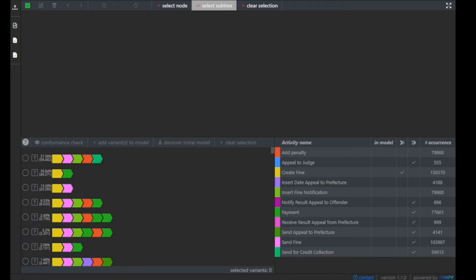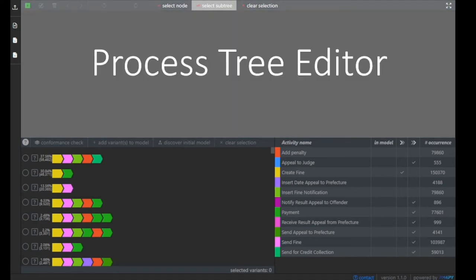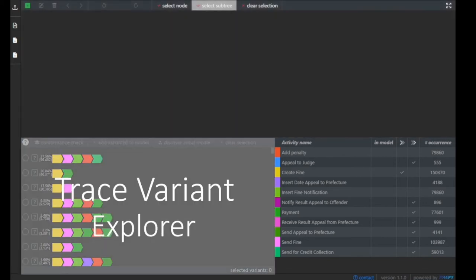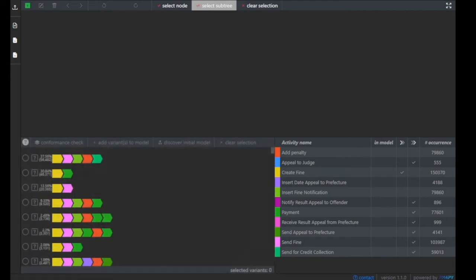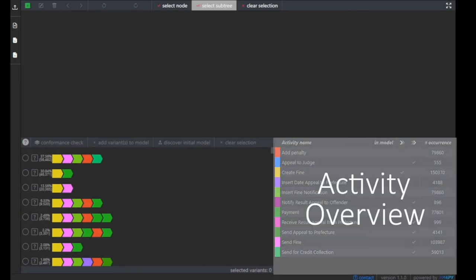The tool itself consists of three main components. The first one is the tree editor at the top, where we will see a process model. The second component is a variant explorer, where we see in a graphical manner our different traces that occur in our event log. The third component is an activity overview, which gives us information on all the possible process activities which occur in the event log.